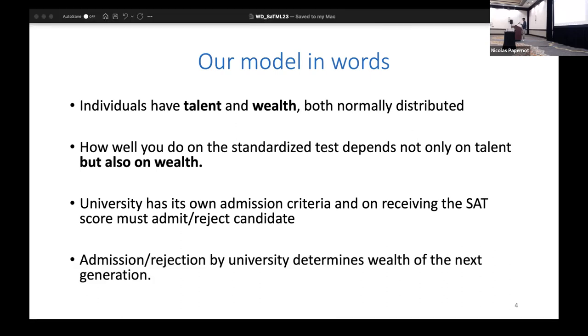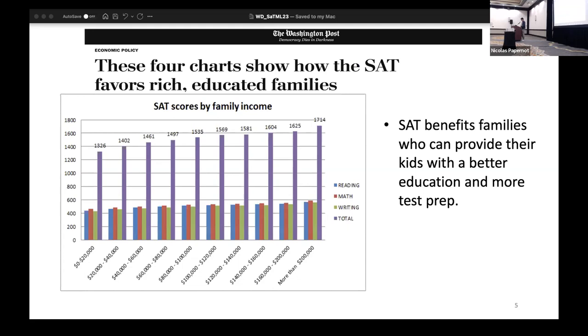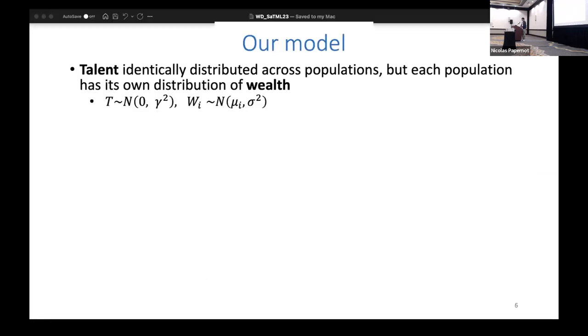Let me give some evidence on why wealth is important. As you can see on the x-axis you have annual income, and as annual income is rising, the SAT score is also increasing. This is because higher income families can provide their children with better education and test prep. So with that evidence laid, let's look quantitatively at what our model looks like.